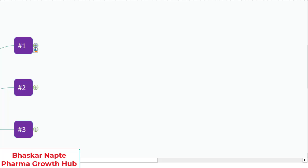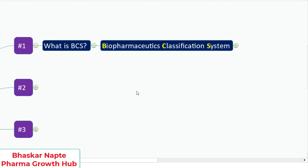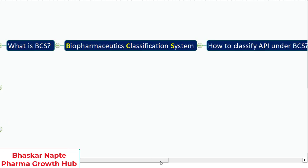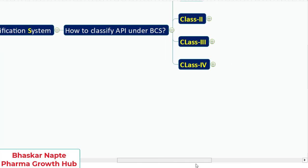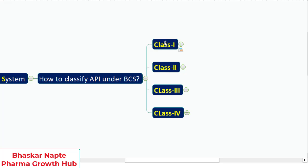What is the full form of BCS? It stands for Biopharmaceutics Classification System. According to this system, all drug substances are divided into four different classes.